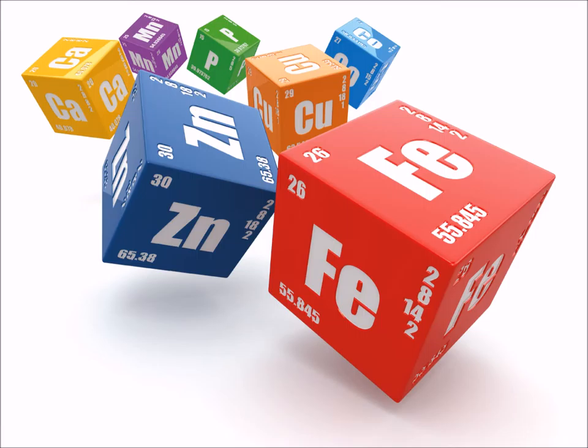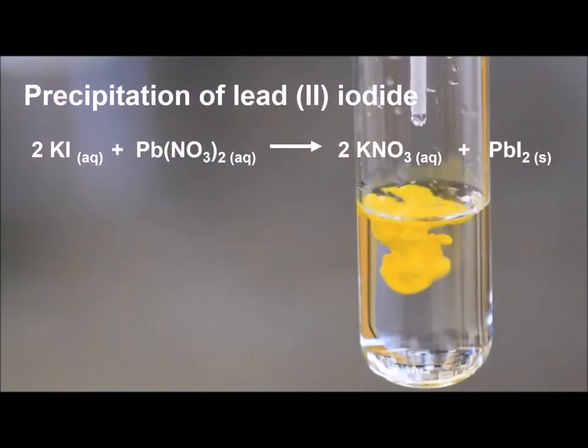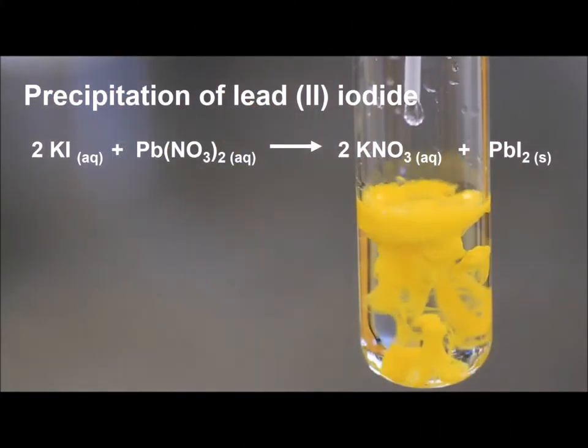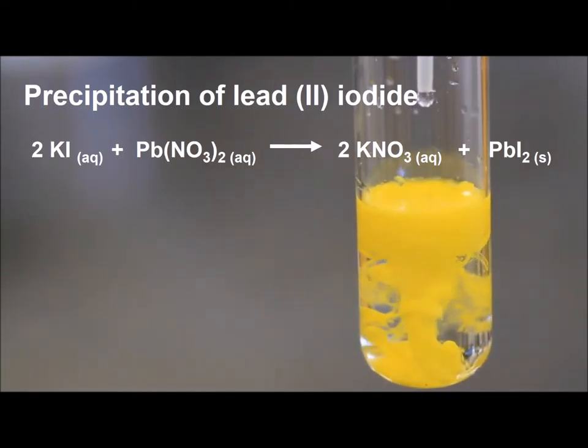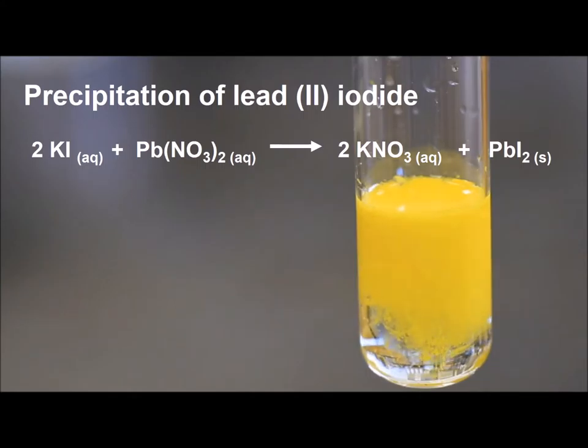The first reaction we are going to look at is a precipitation reaction. In a precipitation reaction, two solutions are mixed and form a precipitate. A precipitate is an insoluble solid ionic compound. In this reaction, we are seeing the formation of lead-2-iodide when aqueous solutions of potassium iodide and lead-2-nitrate are mixed.